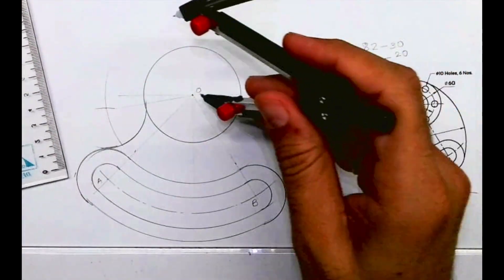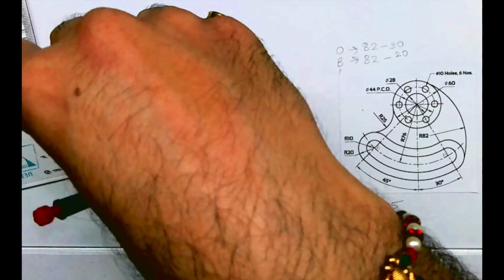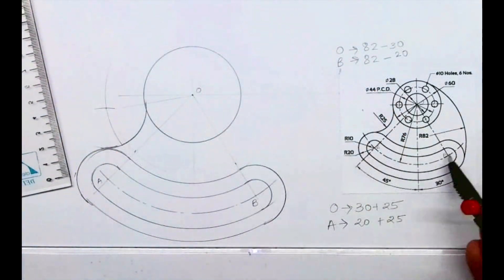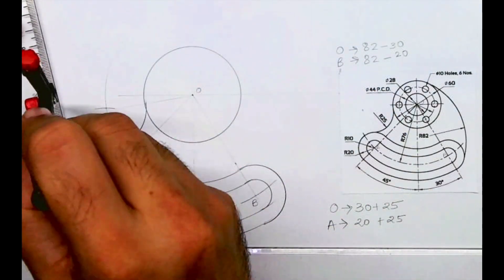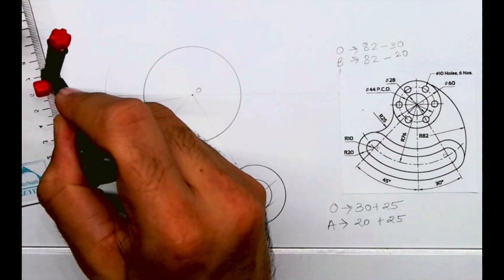So from O we will cut 52, and from B we will cut 62. Wherever they intersect, from that point we can cut 82.